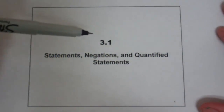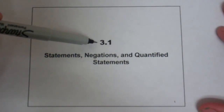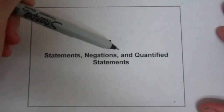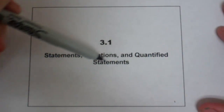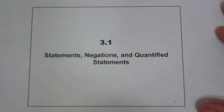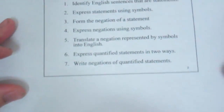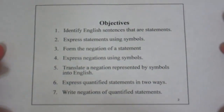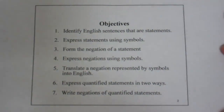This is section 3.1. We're going to talk about statements, negations, and quantified statements — our introduction to the logic chapter. We have seven objectives: identify English sentences that are statements, express statements using symbols, form the negation of a statement, express negations using symbols, translate a negation into English, express quantified statements in two ways, and write negations of quantified statements.